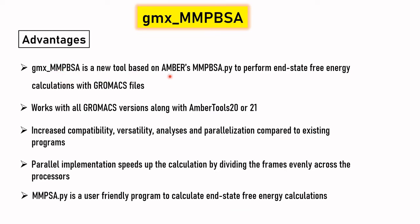The different advantages are: it is a new tool based on AMBER's mmpbsa.py, written in Python, to perform end-state free energy calculations. It works with all GROMACS versions along with AmberTools 20 or 21. It has increased compatibility, versatility, analysis, and parallelization compared to existing programs. You can also use parallel implementation to speed up calculations by dividing frames evenly across processors. It is a very user-friendly program for end-state free energy calculations.